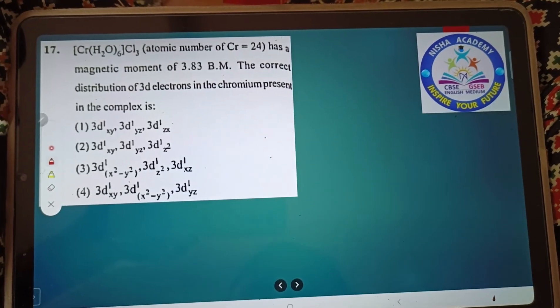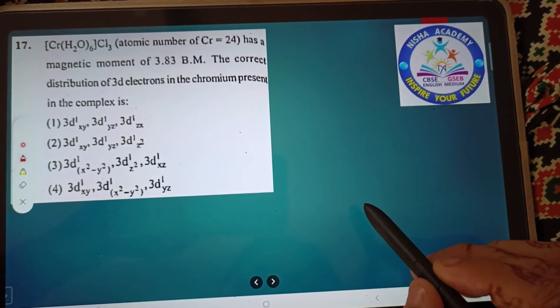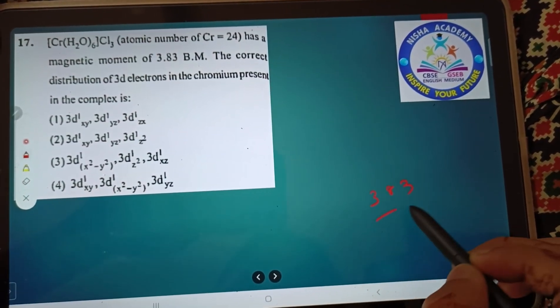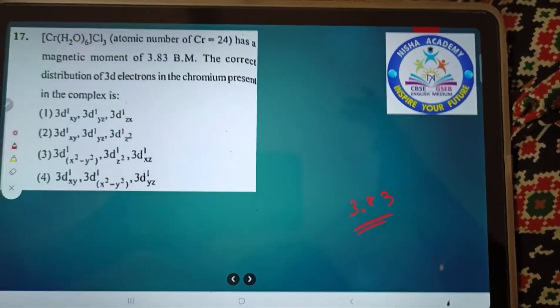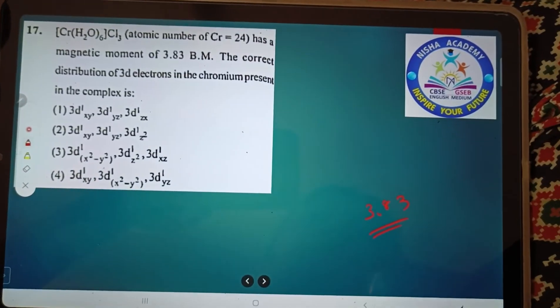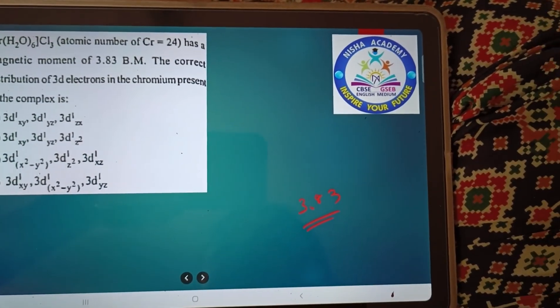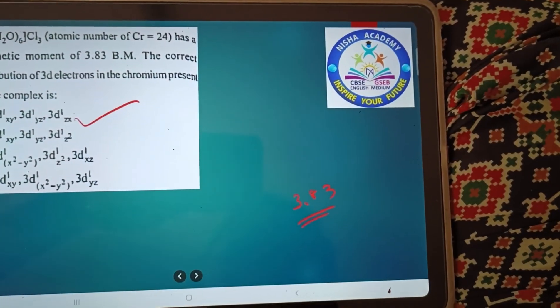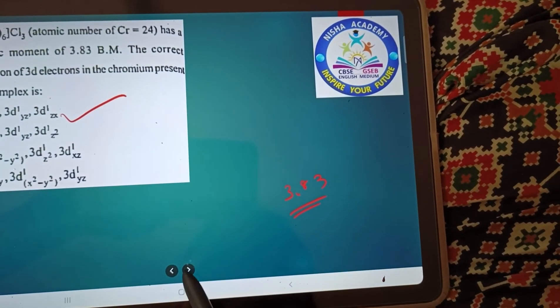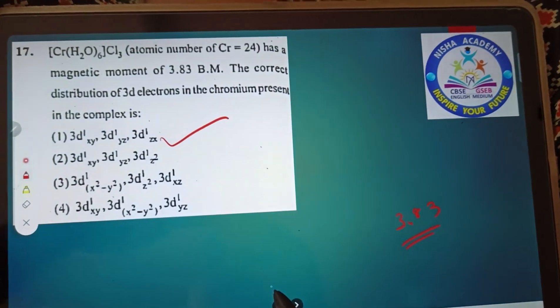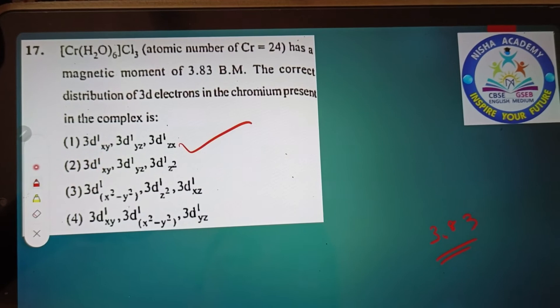Cr(H2O)₆Cl₃ has magnetic moment 3.83. How many 3d electrons in the chromium? Question number 17 - three electrons arranged. The oxidation number of Cr is +3. Clear? Yes.